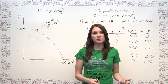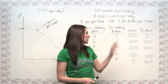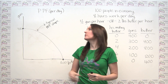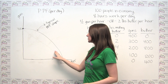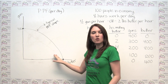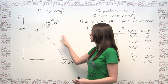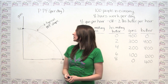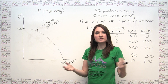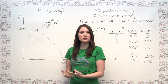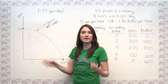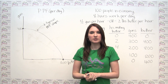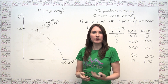There are two other things to note about the production possibilities frontier. First, although in this example the PPF turned out to be a straight line, in general it actually shows a bowed-out shape — we'll come back and talk about why. Second, when there's no trade among parties and an economy can only consume what it produces, we can also think of the production possibilities frontier as a consumption possibilities frontier, because what they can consume is limited by what they can produce.